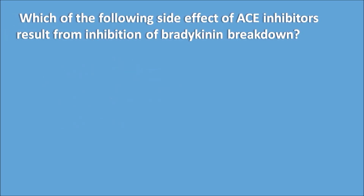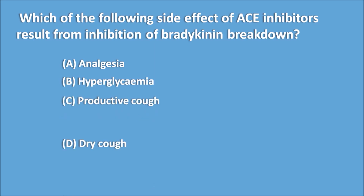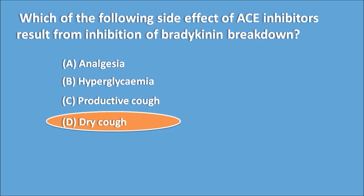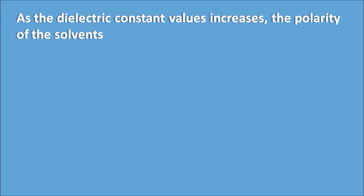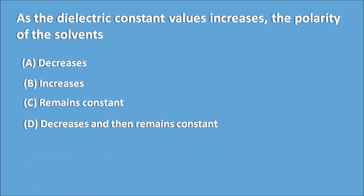Which side effect of ACE inhibitors results from inhibition of bradykinin breakdown? Options: (a) Analgesia, (b) Hyperglycemia, (c) Productive cough, (d) Dry cough. Answer: Dry cough is the common side effect due to inhibition of bradykinin breakdown. As dielectric constant values increase, the polarity of the solvent: (a) Decreases, (b) Increases, (c) Remains constant, (d) Decreases then remains constant. Answer: (b) Increases — dielectric constant is an indicator of polarity.